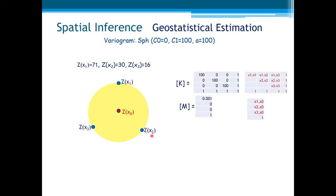So this gives rise to the Kriging matrix, the matrix K, which is the matrix of the covariance between the samples. There is no covariance between the samples, as all of them are far from the range value. And also, the covariance between the sample and the point are zero as well. Of course, this gives rise to the weights of those three samples, which are all equal.